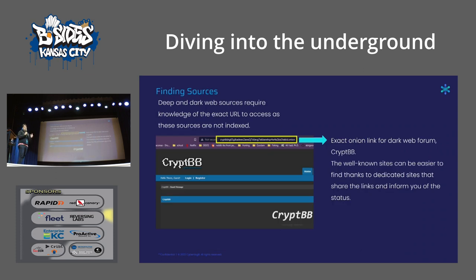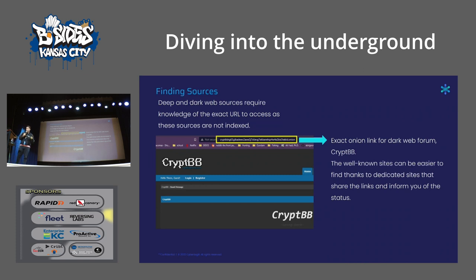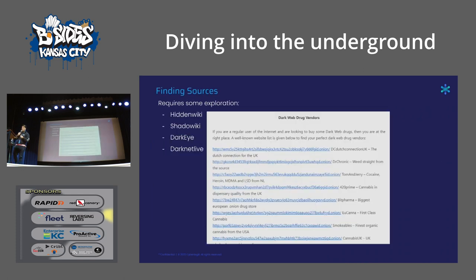When it comes to dark web sources, there's a challenge: most sources are difficult to find because people are trying to remain anonymous. You actually need the full onion link to get to these sources — you can't just Google a name and log in. There are different ways to find those links. Some sources host lists of onion links, but they're typically listing drug sites, since that's the most popular reason people go to the dark web.